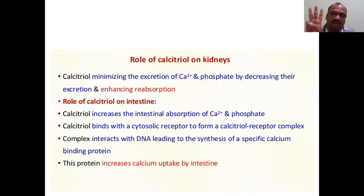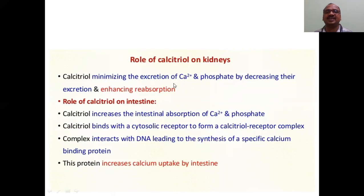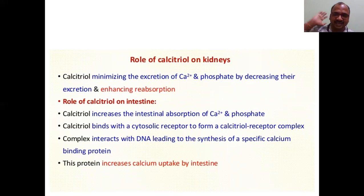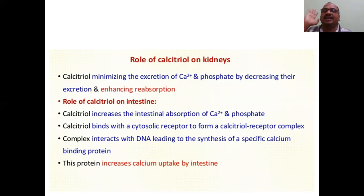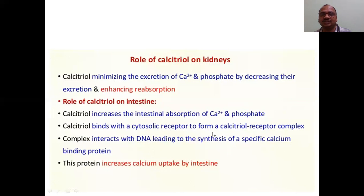This is the role of calcitriol — that is D3 — on the kidneys. Calcitriol minimizes the excretion of calcium and phosphate by decreasing their excretion and enhancing reabsorption. From the kidney, reabsorption is increased so that excretion is decreased. And the role of calcitriol on the intestine: it increases the intestinal absorption of calcium as well as phosphate. Calcium uptake will be increased by the intestine.